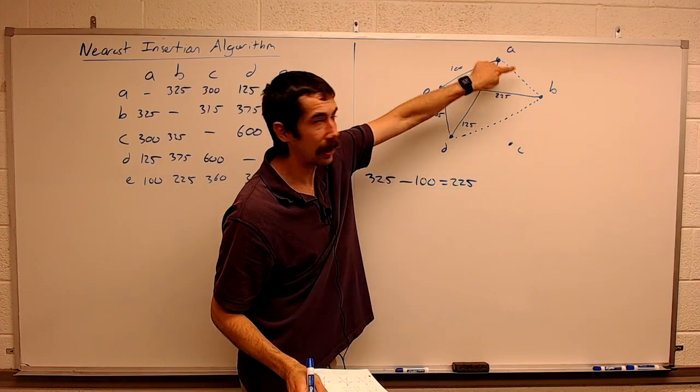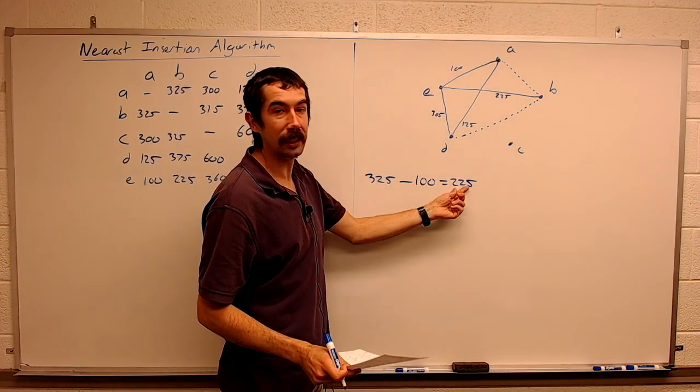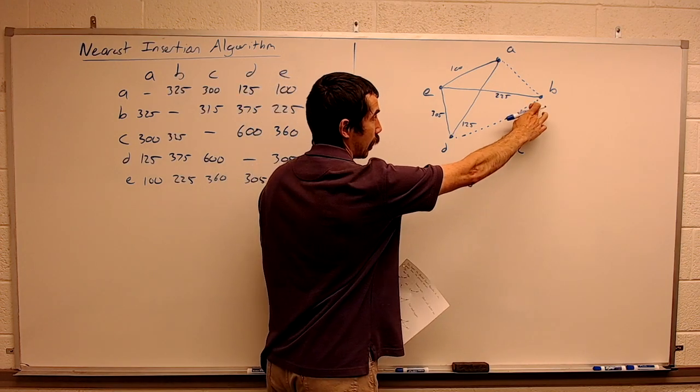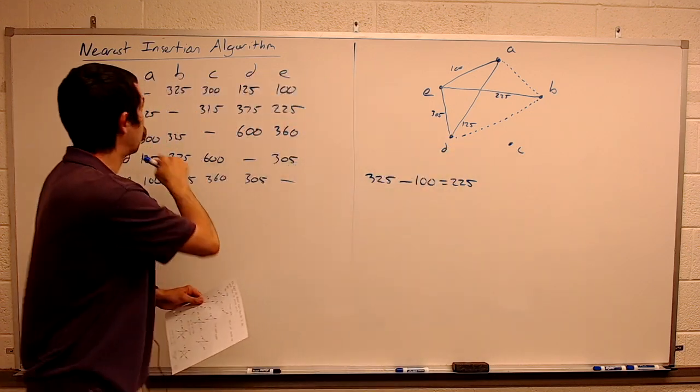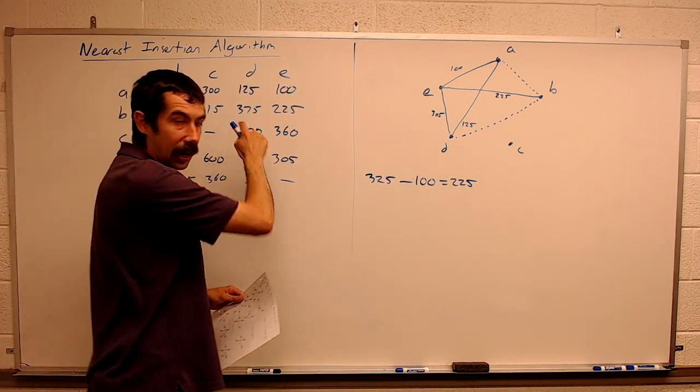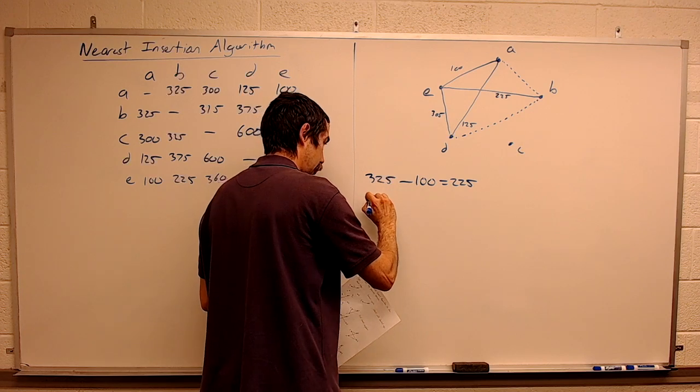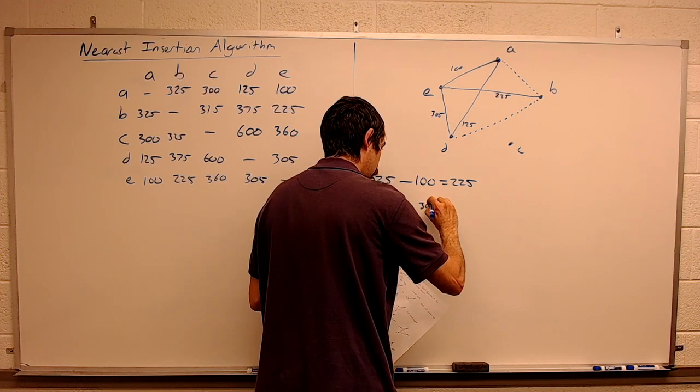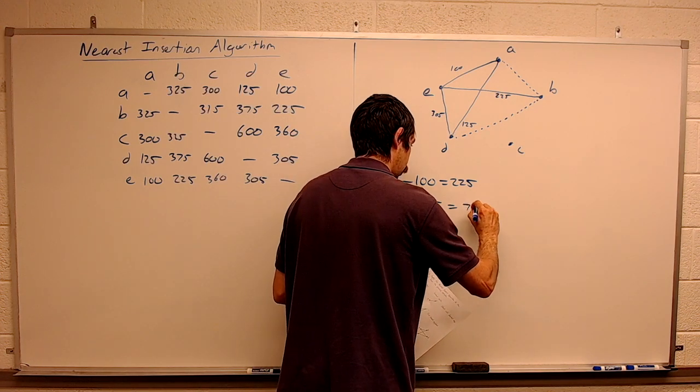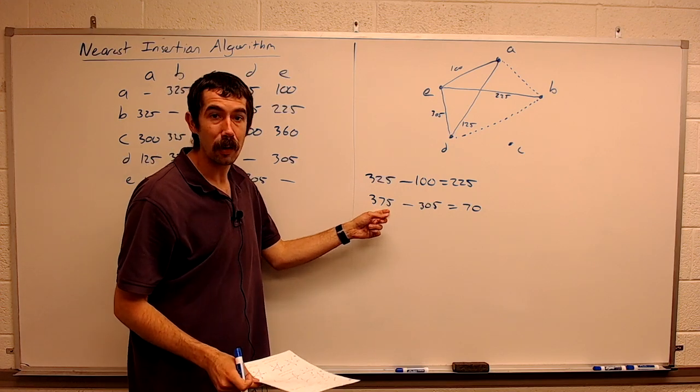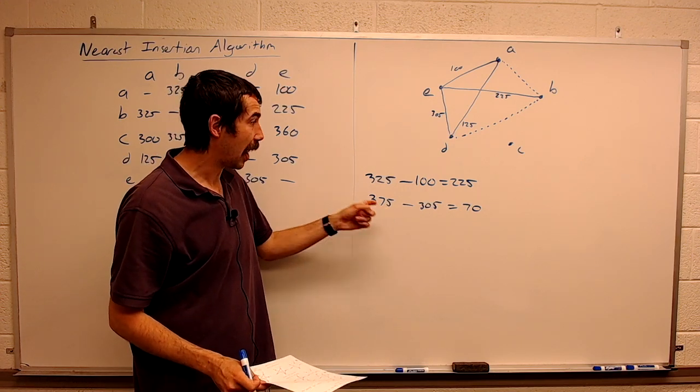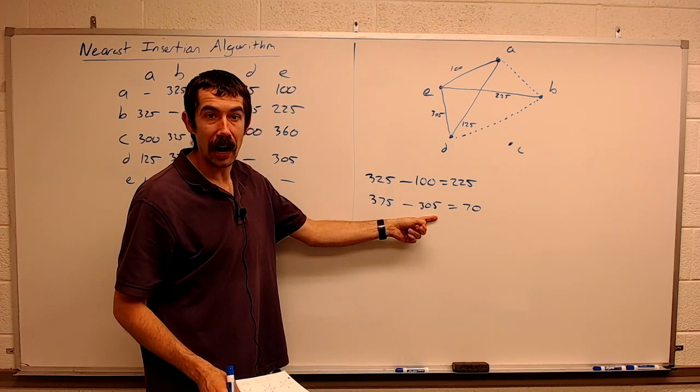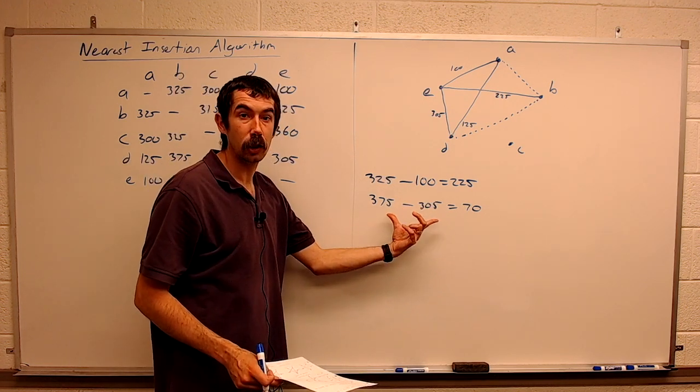So adding BA and getting rid of AE, that increases our weight by 225. The other option is including BD, BD is 375, but we subtract off 305. So even though 375 is a bigger edge than 325, the fact that we're getting rid of the 305 makes this process cheaper. So we're going to do this one.